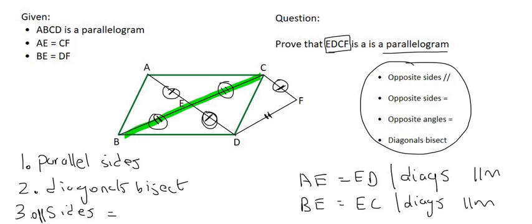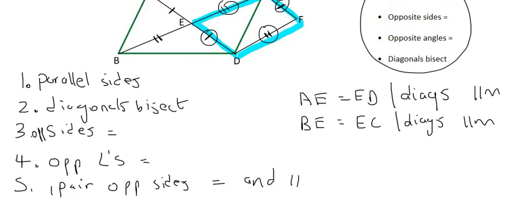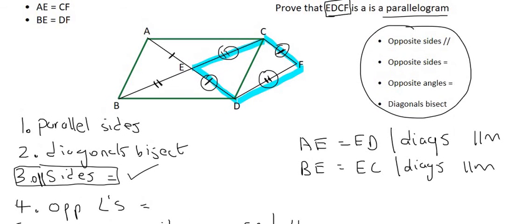So look what we've just done. In this quadrilateral over here, we have just shown that the opposite sides are equal in length. And that's this one over here, the third option. If the opposite sides are equal, then we can say it's a parallelogram.